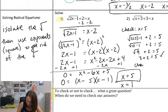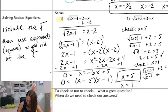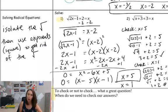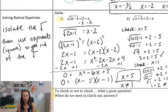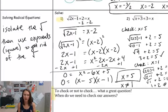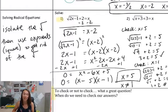If I check x equals 1: square root of (2·1 − 1) + 2 equals 1. Square root of 1 plus 2 equals 1. 1 plus 2 does not equal 1 — nope, it doesn't. So x equals 1 is actually an extraneous solution, which means it's not an answer. This happened because square root functions have restricted domains. Not all real numbers will work for square roots — when we have square roots of negative numbers, we have imaginary numbers.